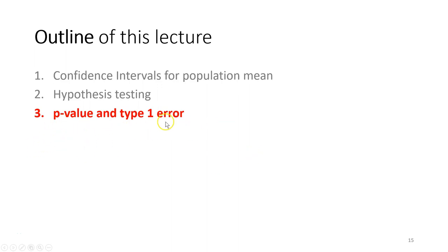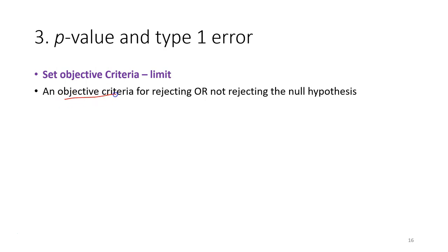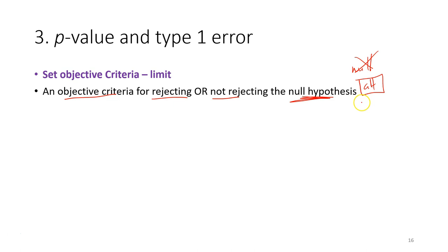This lecture is about p-value and type 1 error, the last topic on hypothesis testing. Previously, we talked about setting an objective criteria to reject or not reject the null hypothesis. We have two hypotheses: the null hypothesis and the alternative hypothesis. If we reject the null hypothesis, we go with the alternative hypothesis.